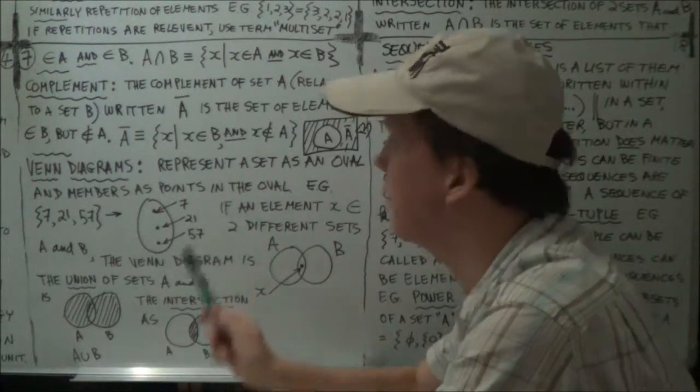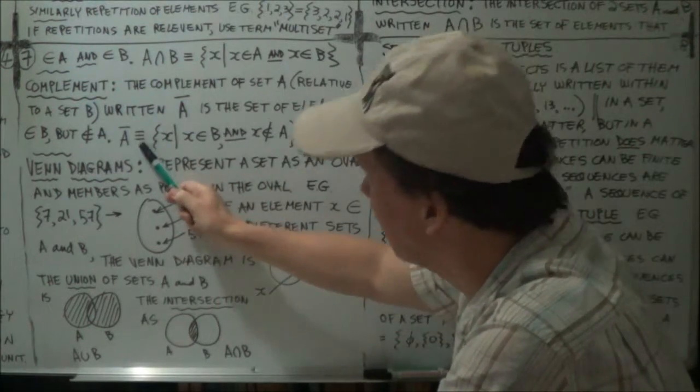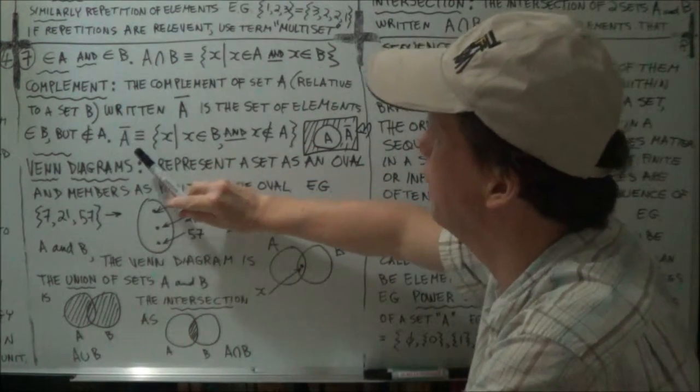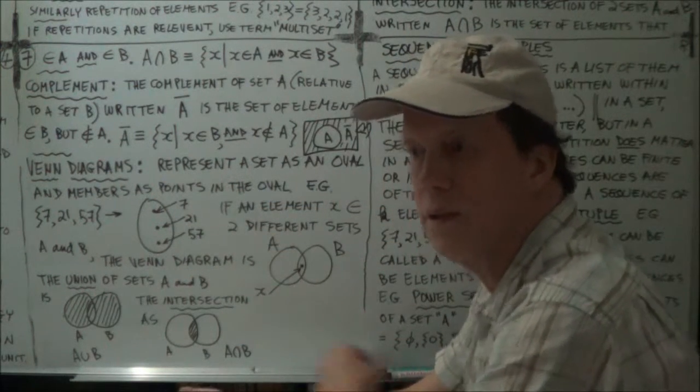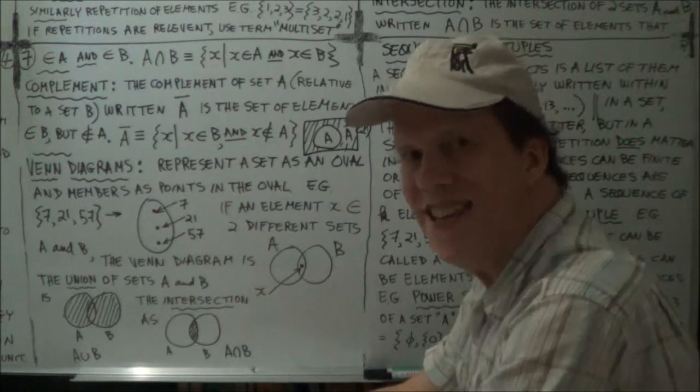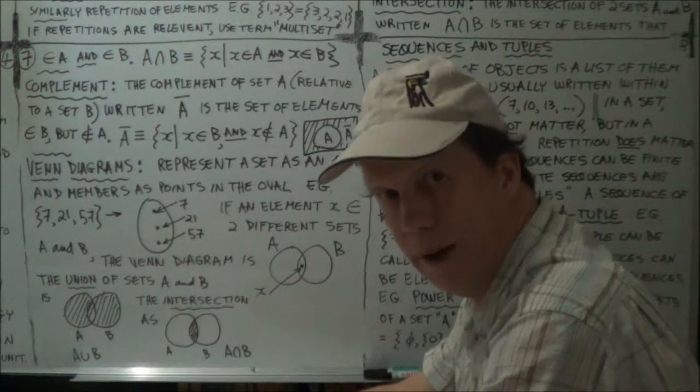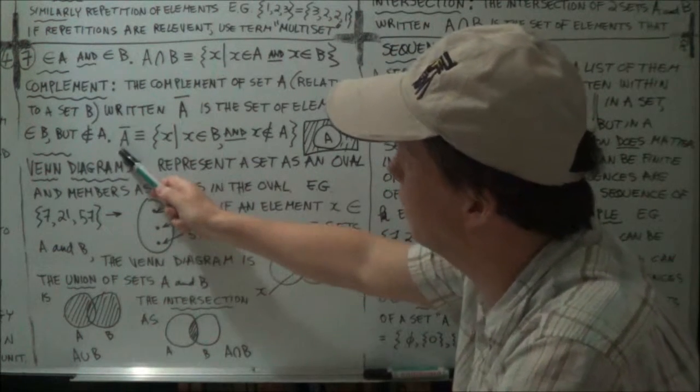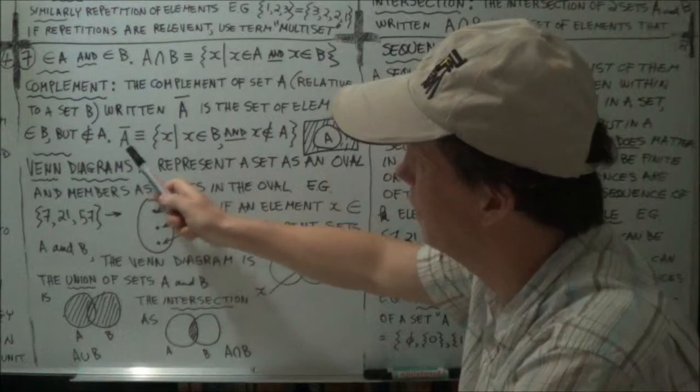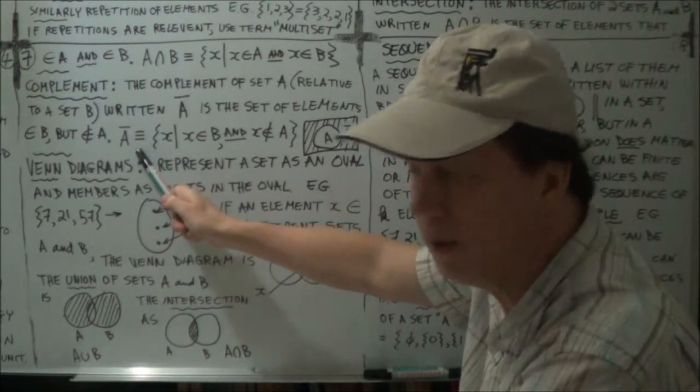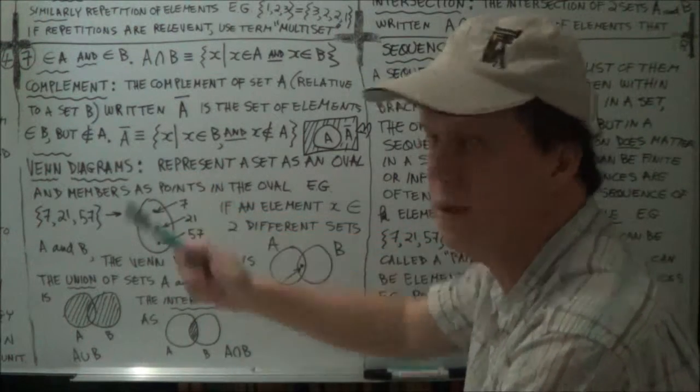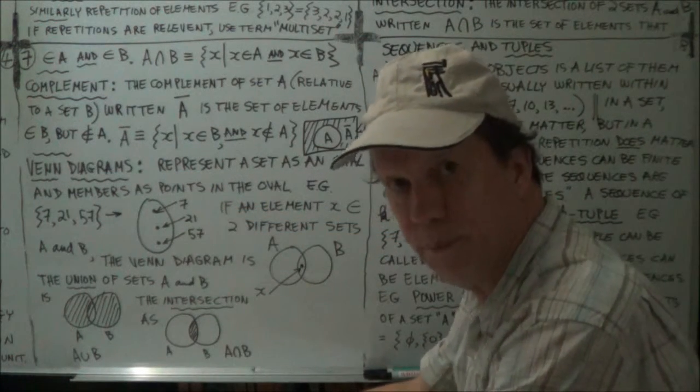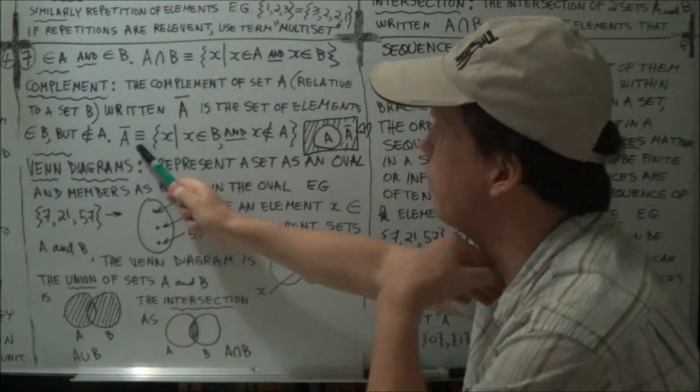So in set notation, in terms of properties, A bar, the complement of A, by definition it's a set of X such that X belongs to B, that's your biggest set, the set that you're taking A relative to, so that X belongs to B, and X does not belong to A. So it's those members of B that do not belong to A. And that set is defined, oh by the way, three bars, if you see three bars like this, that's the symbol for is defined by. This symbol here on the left hand side is defined by this on the right hand side. This is the definition symbol, three bars, definition.